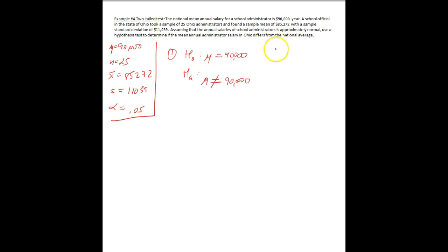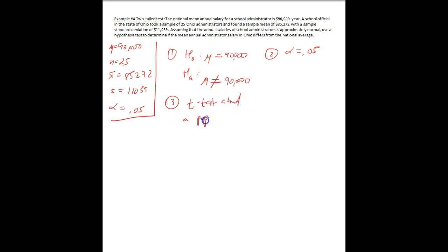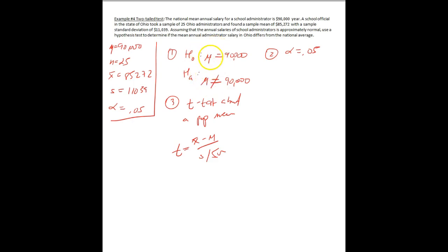Step two: sigma is unknown, so we decided on alpha equals 0.05. Step three: what statistical test are we using? We're going to say t-test about a population mean, equal to t = x-bar minus mu over s divided by square root of n. We're testing the mean and we have an s, not a sigma, so we use the t-test.